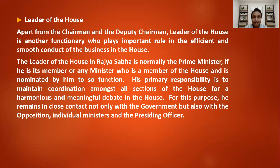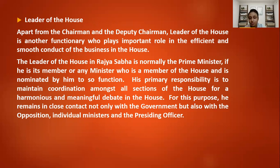The ultimate speaker or leader of Rajya Sabha is the prime minister, who is a member of the Rajya Sabha. His responsibility is to coordinate among all and maintain meaningful debate. He is the responsible government person who will maintain close contact with opposition leaders, individual ministers, and the presiding officer. He occupies the first seat in the chamber, in the first row at the right side of the chair, so that he is easily available to the presiding officer for consultation.